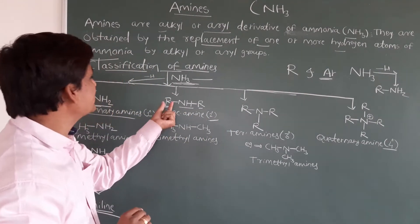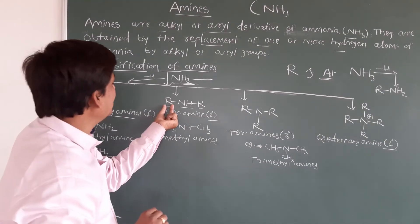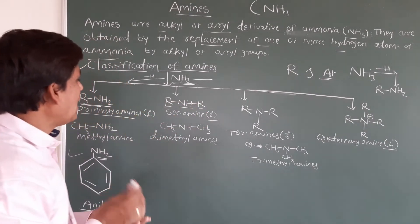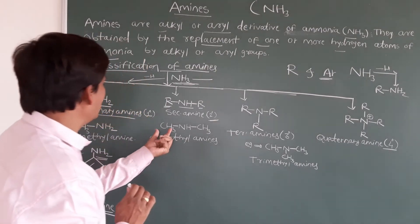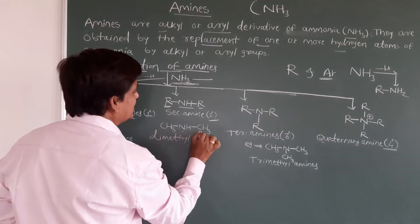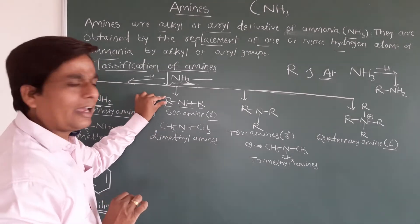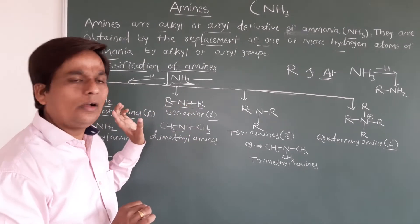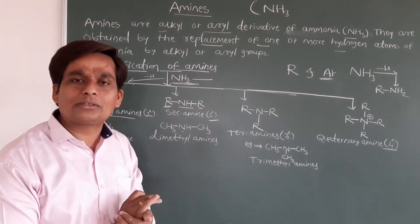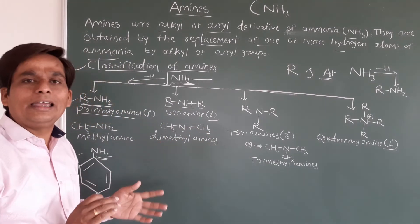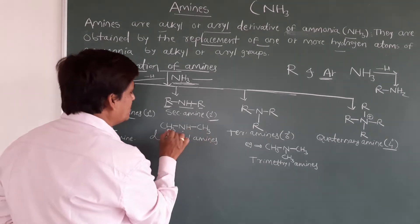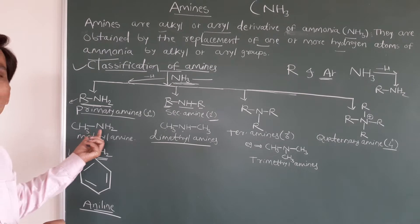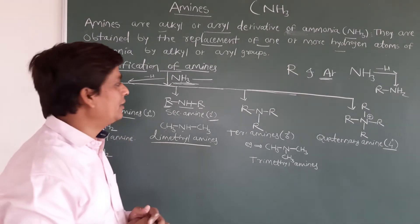In the case of aromatic rings, instead of R groups, if you take benzene rings on both sides, those are aromatic secondary amines. For example, I have taken CH3 and CH3 — methyl groups on both sides — giving dimethylamine. If you take different groups, like an ethyl and a methyl group, you get ethylmethylamine. Similarly, in primary amines, CH3 with NH2 gives methylamine.